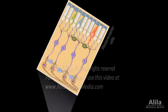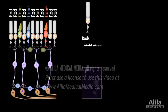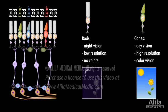The major photoreceptor cells of the retina are rods and cones. Rod cells are responsible for night vision — they can detect dim light but provide low-resolution images and cannot differentiate colors. Cones function in bright daylight; they detect colors and provide high-resolution details.